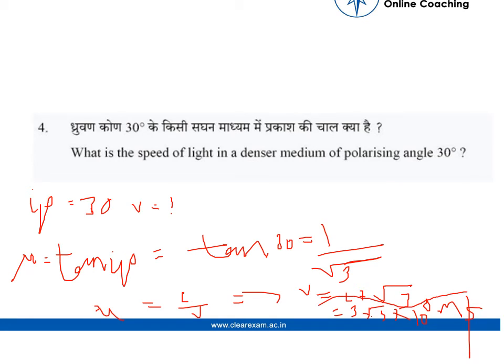This is because the speed of light c equals 3 times 10 raised to the power 8 meters per second. So the speed of light in the medium is 3 root 3 times 10 to the power 8 meters per second.